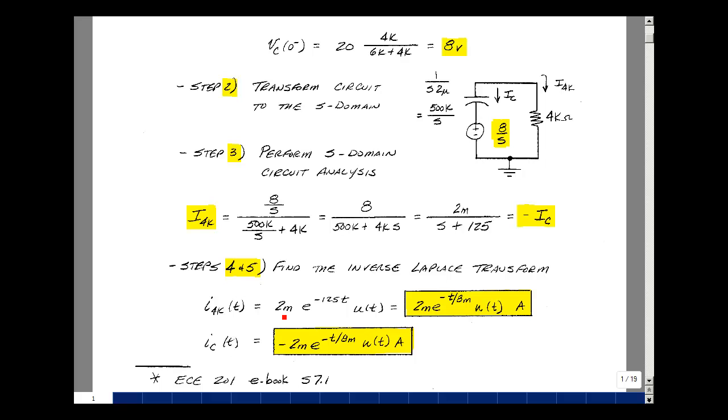We've got a scalar here of 2 milli, and 1 over S plus alpha is E to the minus alpha T. Let's write the 125 as a time constant, so 1 over 125 turns out to be 8 milliseconds. So the resistor current is 2 milli times E to the minus T over tau, where tau is equal to 8 milliseconds, where in 5 time constants, this term will drop by 99%. Then multiply this by U of T, and units are amps.